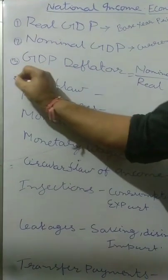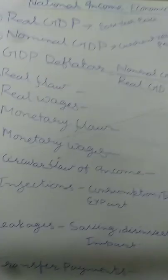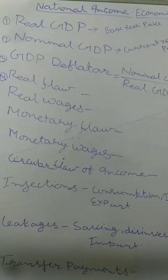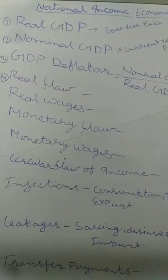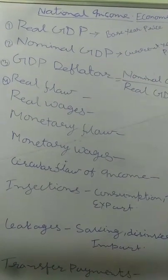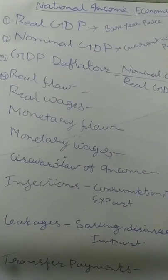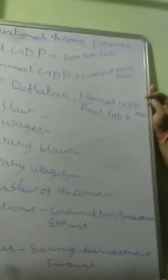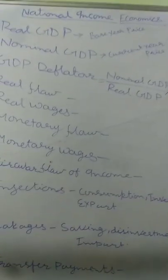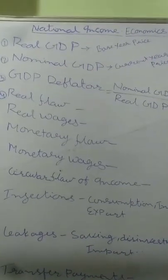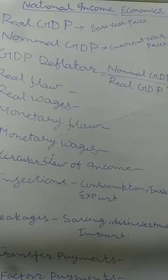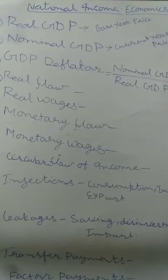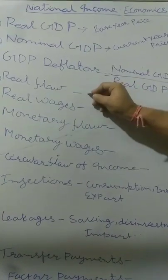The next term is Real Flow. As we know, in a two-sector economy, one sector is the production sector and another is the household sector. When goods and services flow from the production sector to the household sector on the basis of payments made by the consumer, that flow is called Real Flow.